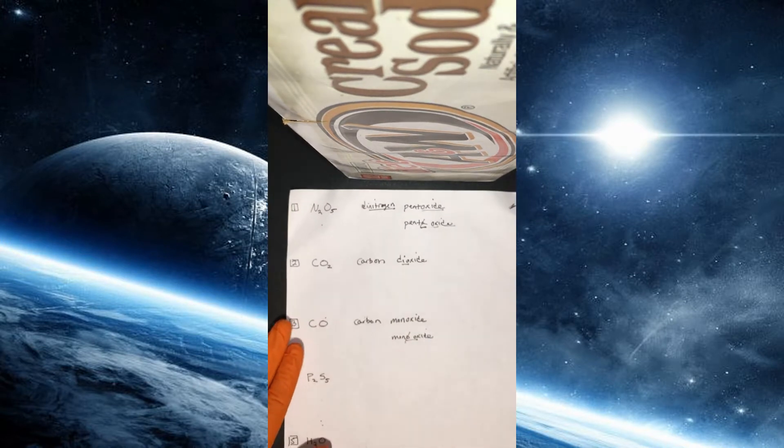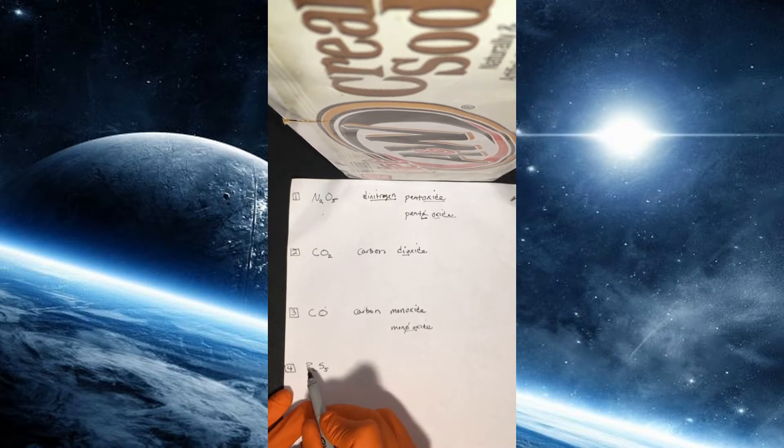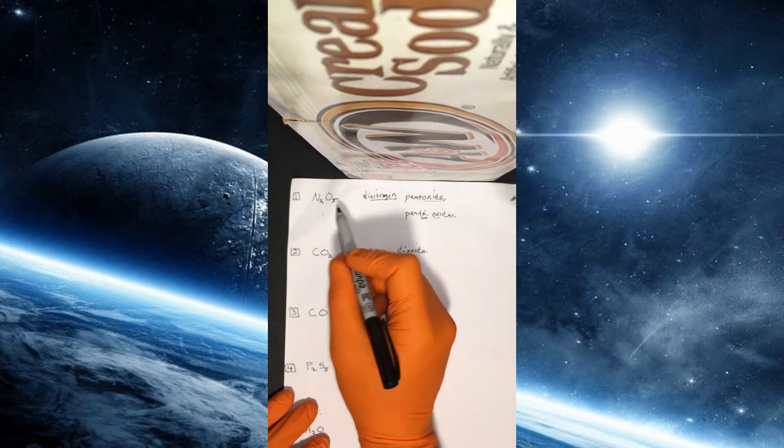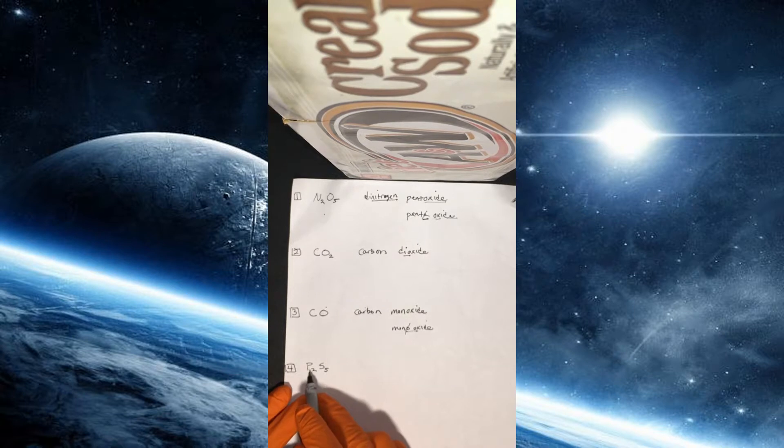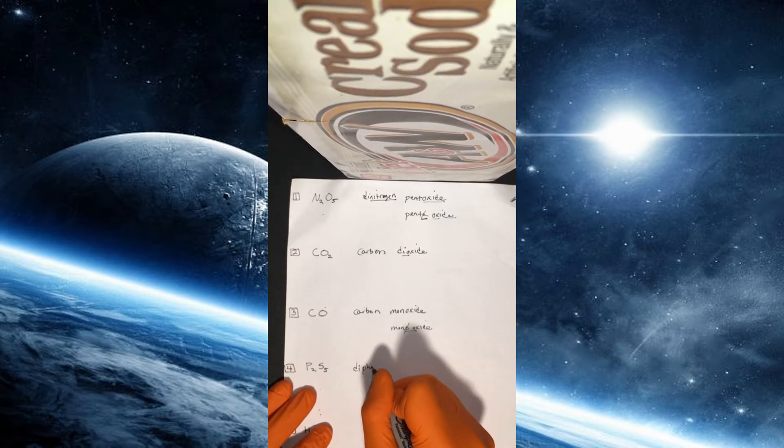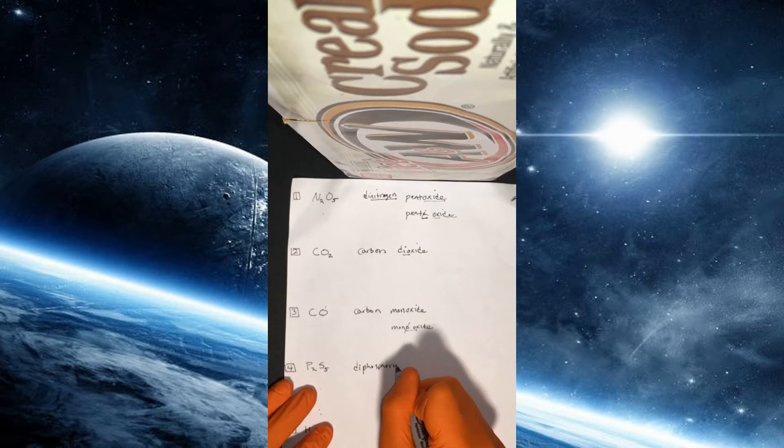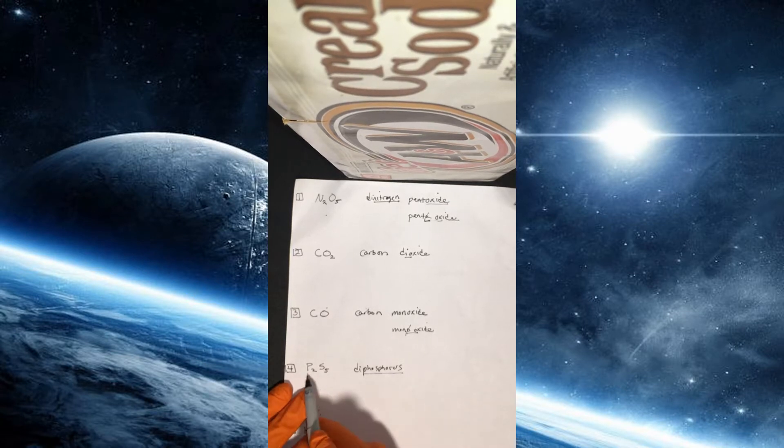Now for our fourth example we have here P2S5, so two atoms of phosphorus and five atoms of sulfur. This one's going to follow a similar rule to what we had at the top. This is one of our simpler ones. So again, we have two phosphorus atoms, so we're going to say diphosphorus. And again, we don't change the name phosphorus because it's the first element.